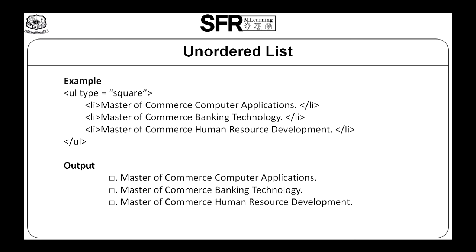Here is the example for Unordered List. In this program, the user uses the Type Attribute only. In the Type Attribute, the user specifies the square value. The list of items are enclosed within the LI tag. The output is shown below.